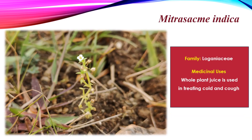Next is Mitrasemeia indica, which is also an important flora of wetlands. You can find this plant on the banks of wetlands and in marshy areas. This plant belongs to the Loganiaceae family. The whole plant juice is used in treating cold and cough.